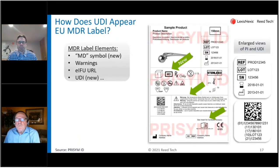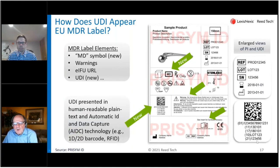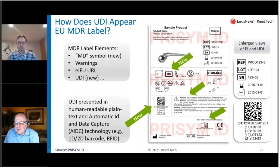One quick comment about labels: how does UDI actually appear on an MDR-compliant product label? You'll see a number of things there. Be aware there's an MD symbol for medical devices. For UDI presentation, this example has a 2D barcode followed by the device identifier and those additional production identifiers.